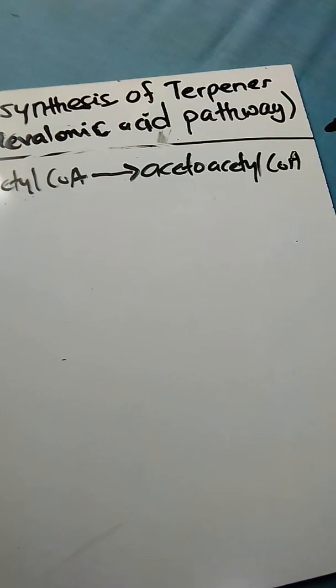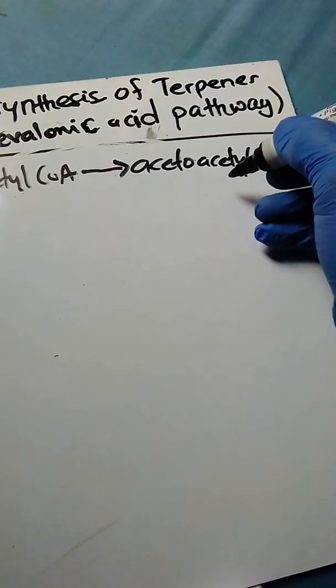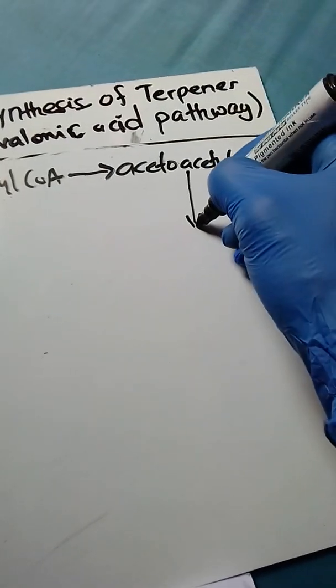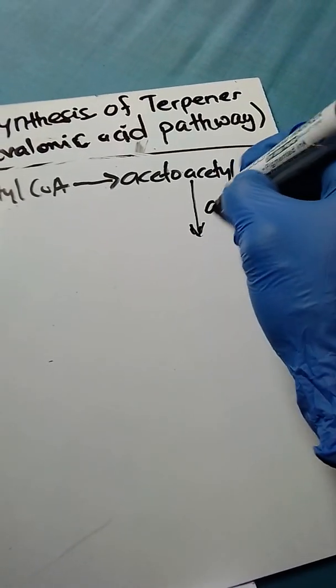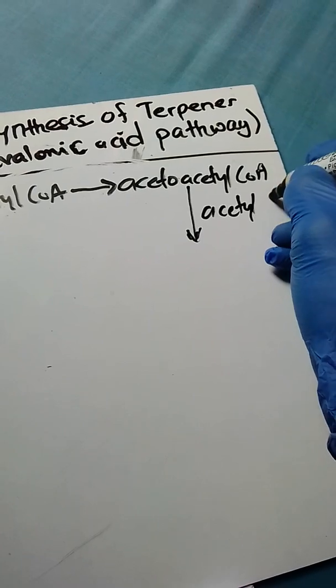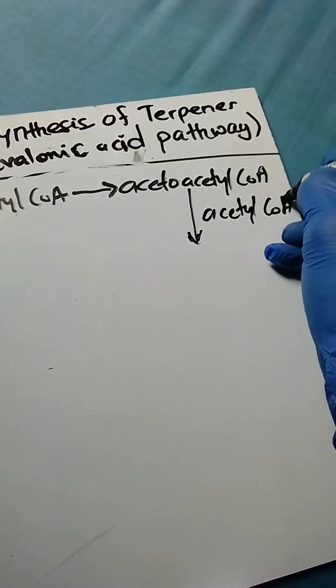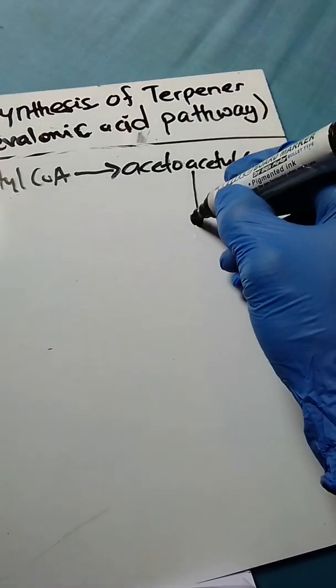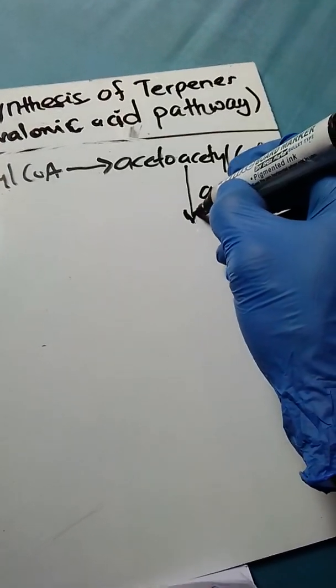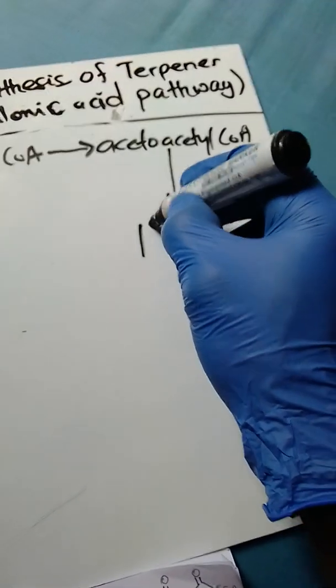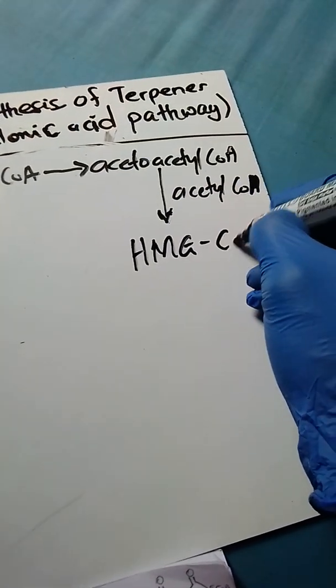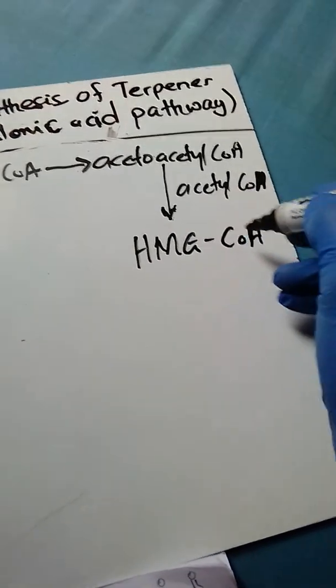The acetoacetyl-CoA further undergoes another condensation with another molecule of acetyl-CoA, followed by hydrolysis to produce what we call HMG-CoA, hydroxymethylglutaryl-CoA.